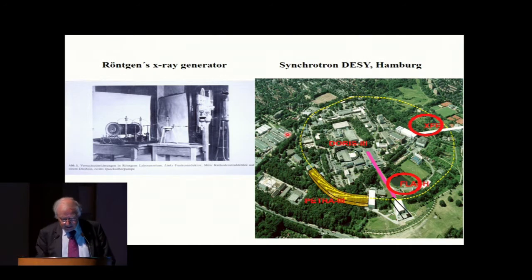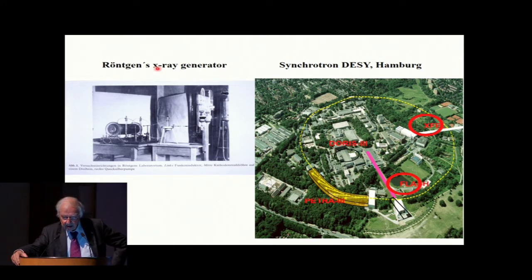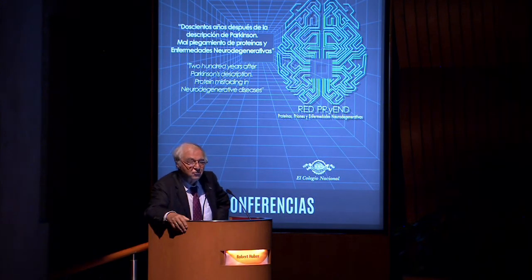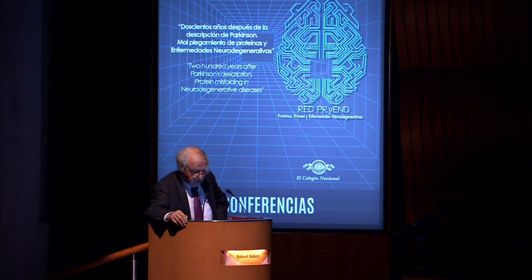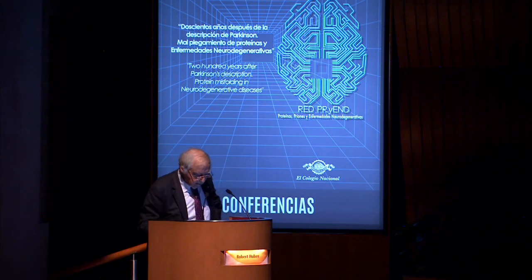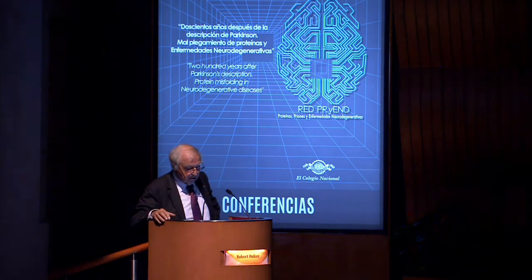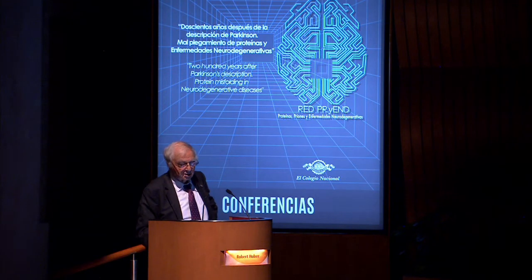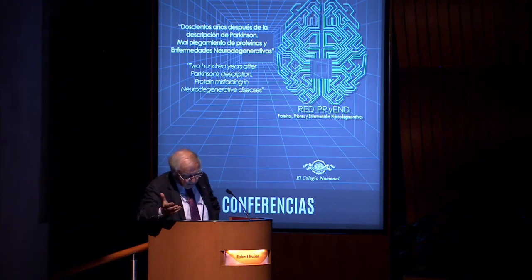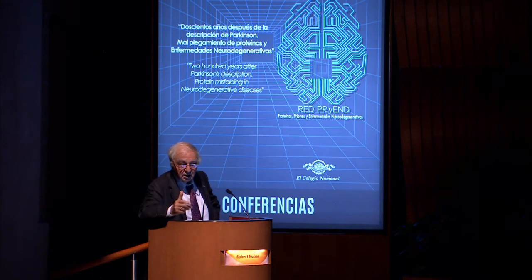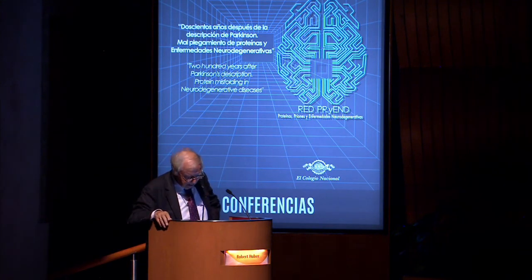The second reason was that instead of having a classical x-ray generator — this is Röntgen's x-ray generator, which you can see in Munich in the Deutsches Museum, the mother of all technical museums around the world — we now use synchrotrons, which are extremely powerful x-ray machines working with a different principle of x-ray generation and speeding up the collection of x-ray data by factors of thousands and more.